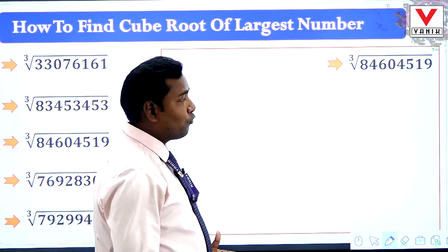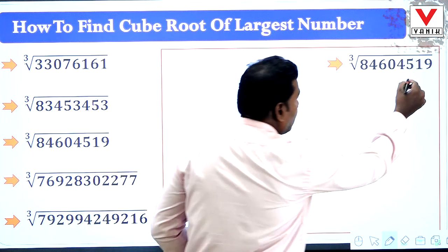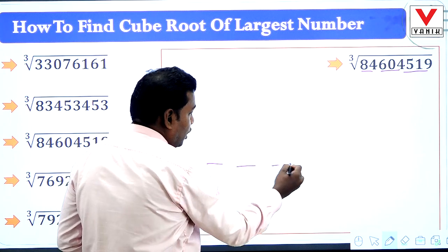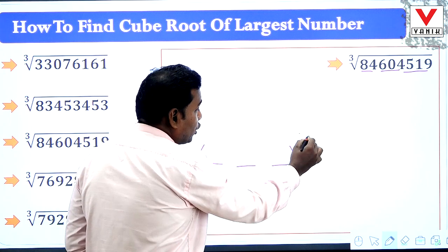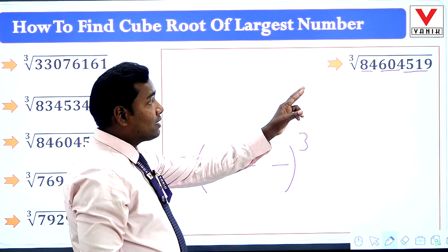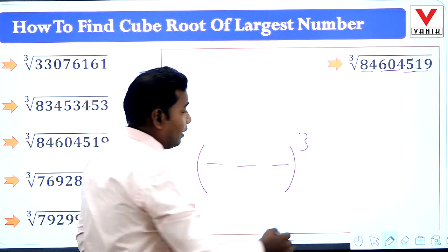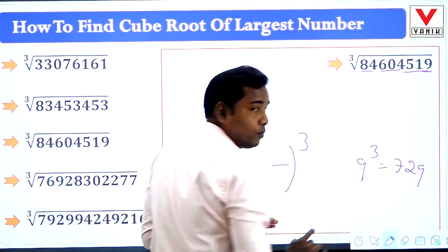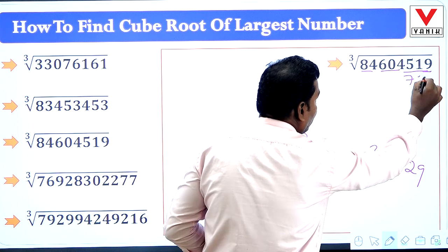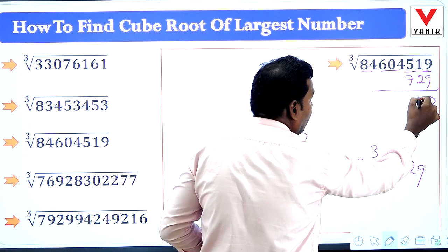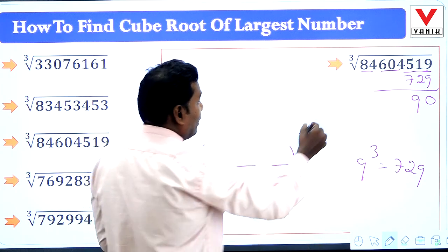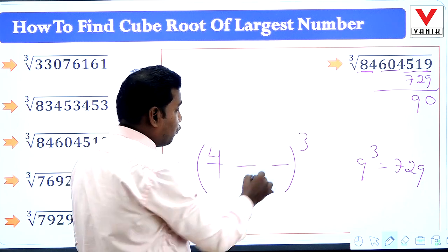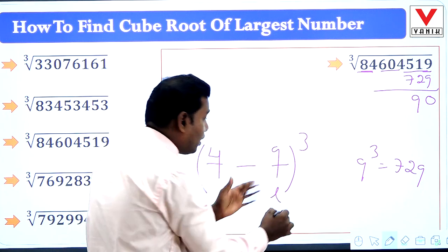Next number: 84604519. We make groups of 3: three groups, so this is a 3-digit number. The unit place digit is 9. Since 9 cube is 729, the last digit is 9. We write 729 and subtract: 9 minus 9 = 0, then 11 minus 2 = 9. The first group is 84; since 4 cube is 64 and 5 cube is 125, and 64 < 84 < 125, the first digit is 4.